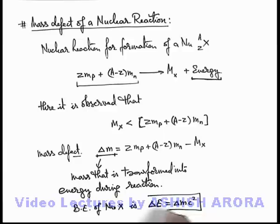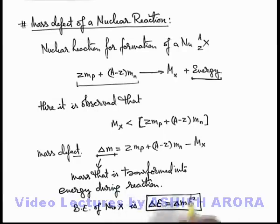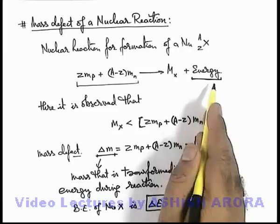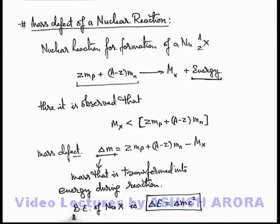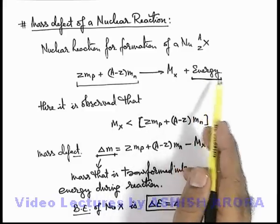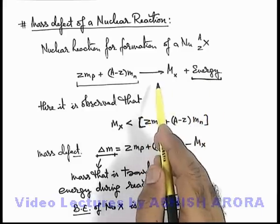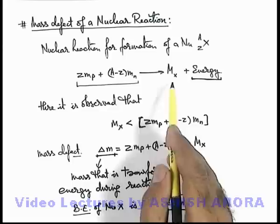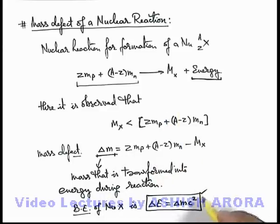This is the way we calculate the amount of energy which is being released in the nuclear reaction. And not only binding energy—in any nuclear reaction, whenever some energy is being produced, it must be due to disappearance of some mass in the reaction. And according to Einstein's mass-energy relationship, we can find out the energy of the nuclear reaction, which we will talk further in detail.